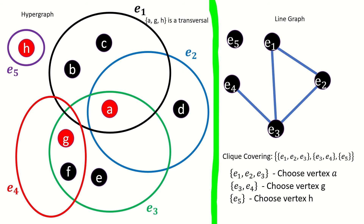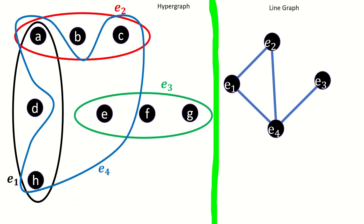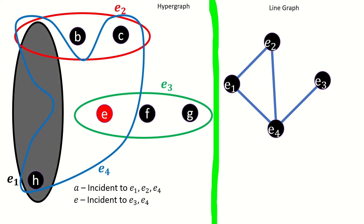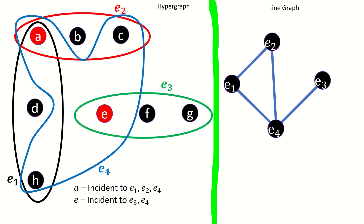Next, let's go in the other direction, using a different heli hypergraph. First, find a transversal in our heli hypergraph. AE is a transversal. Now, for each of the vertices in the transversal, list the set of edges incident to that vertex. A is incident to edges E1, E2, and E4.